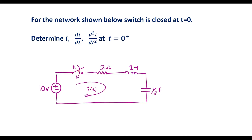Here we can see that there is a switch named as k. The switch is closed at t equal to 0, which means at t equal to 0 minus the switch is opened. We are supposed to find the current in the circuit, first derivative of current, and second derivative of current at t equal to 0 plus. t equal to 0 plus is the period immediately when the switch is closed.